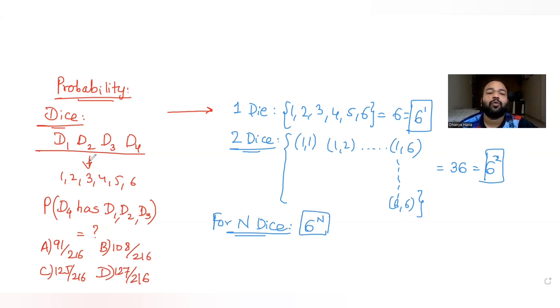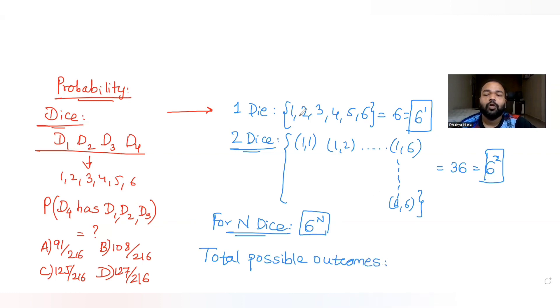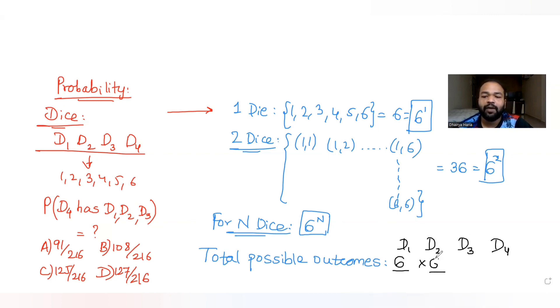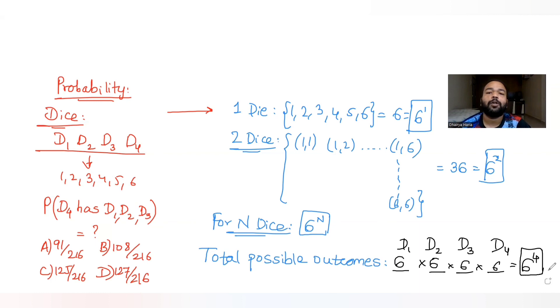Since we have rolled 4 dice — D1, D2, D3, D4 — the total possible outcomes is 6 raised to 4, which is 1296. D1 can have any one of 6 outcomes, D2 likewise, D3 likewise, and D4 as well. Now let's restate the question: find the probability that D4 has any of the outcomes that come on D1, D2, or D3.